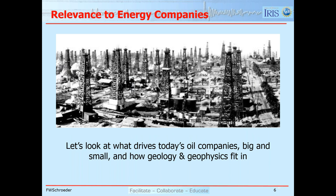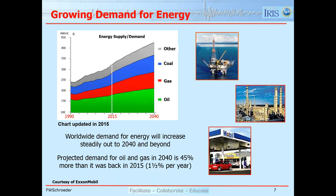What drives today's oil companies, whether they're enormous companies like ExxonMobil or Shell, or small companies with five or six geoscientists? The chart on the upper left shows energy supply — you could also say energy demand. It runs from the year 1990 projected out to the year 2040. The vertical axis is million barrels per day oil equivalent, so oil is our common denominator.